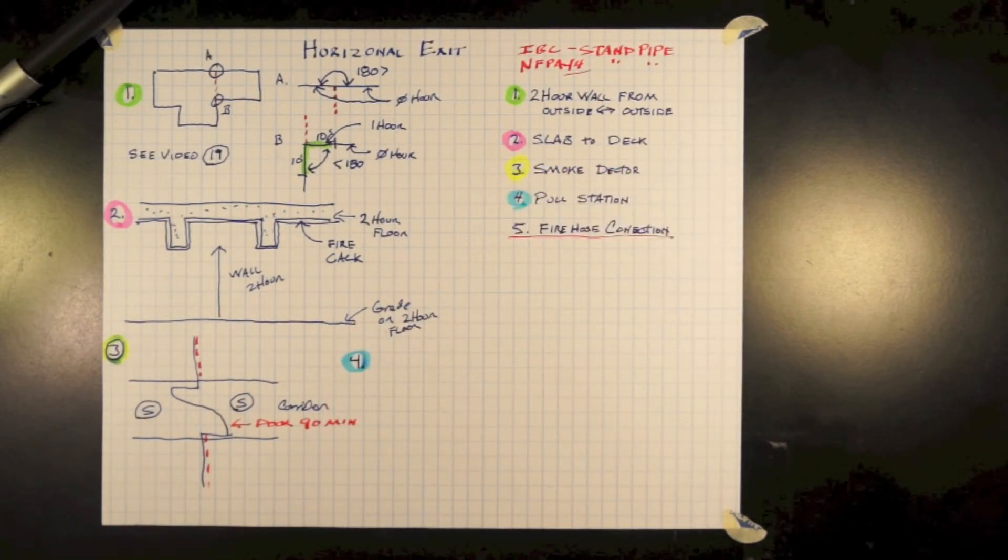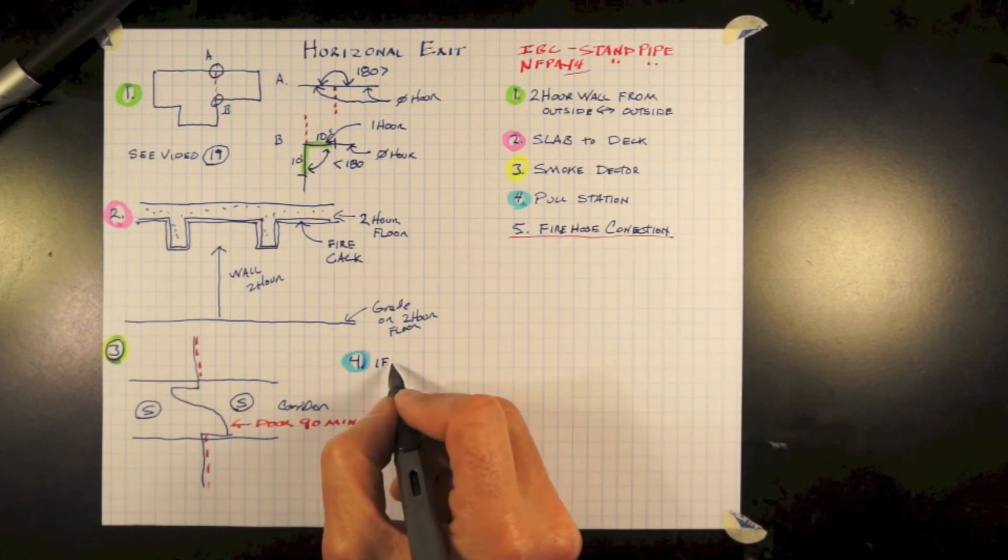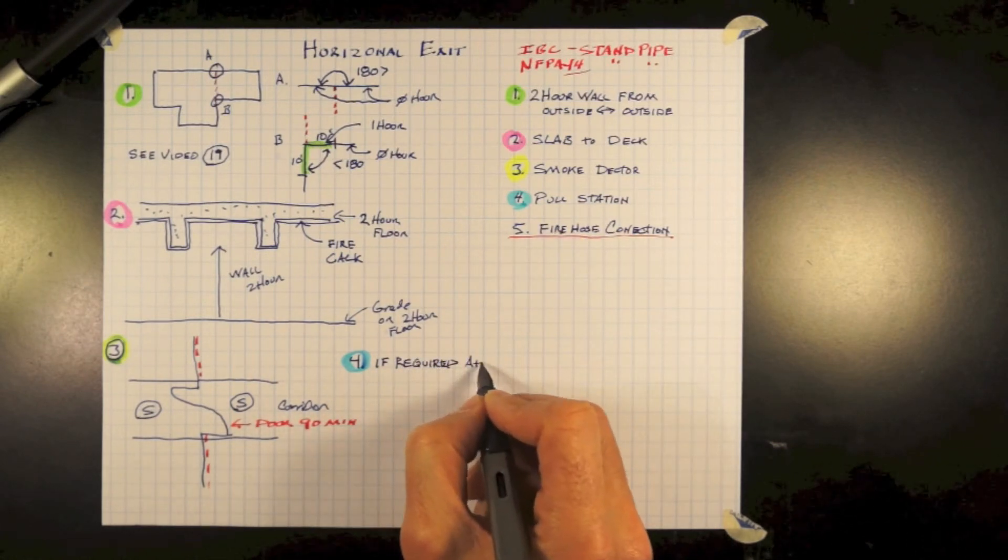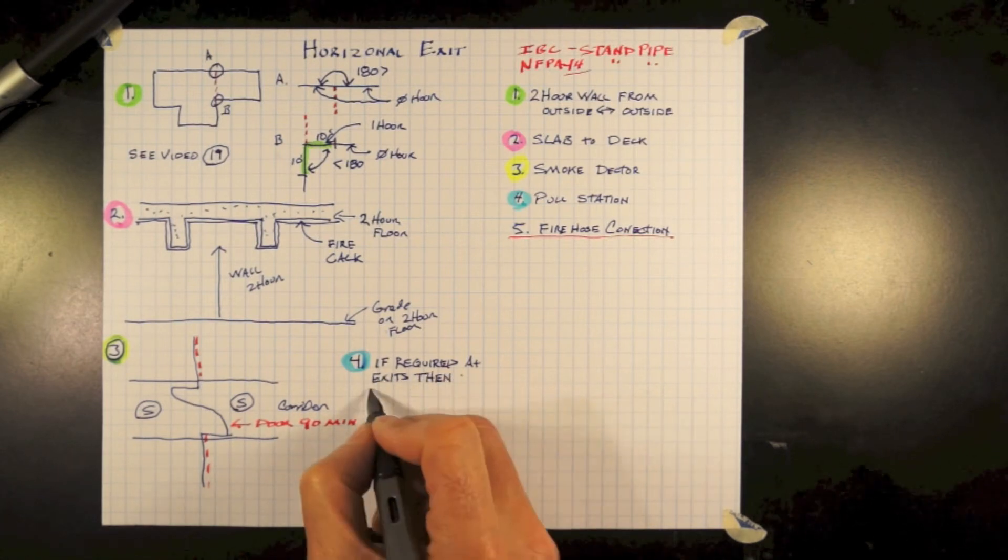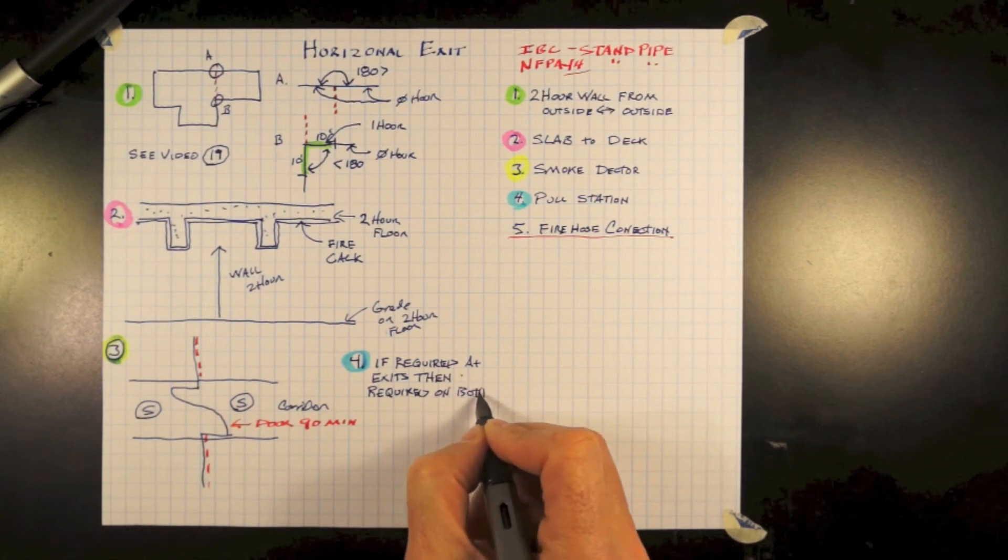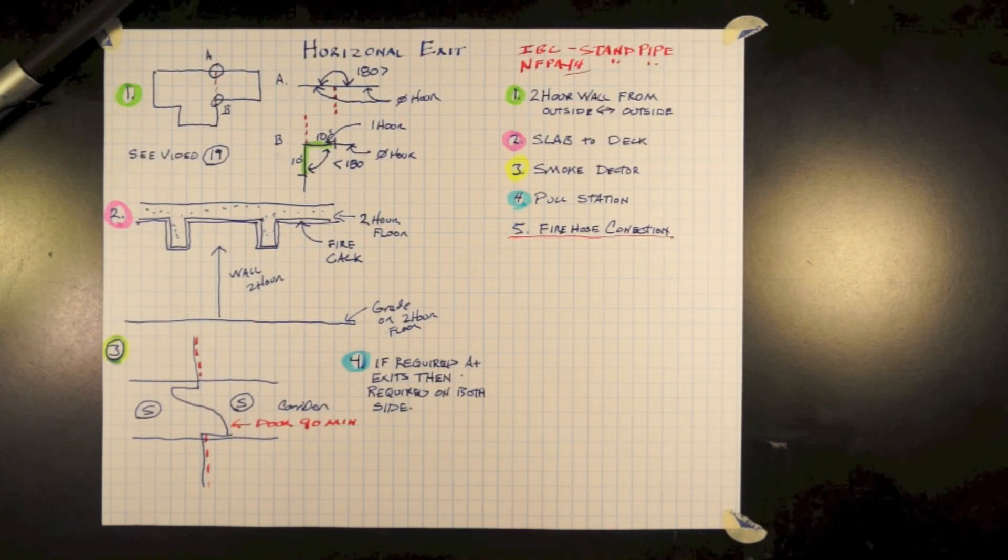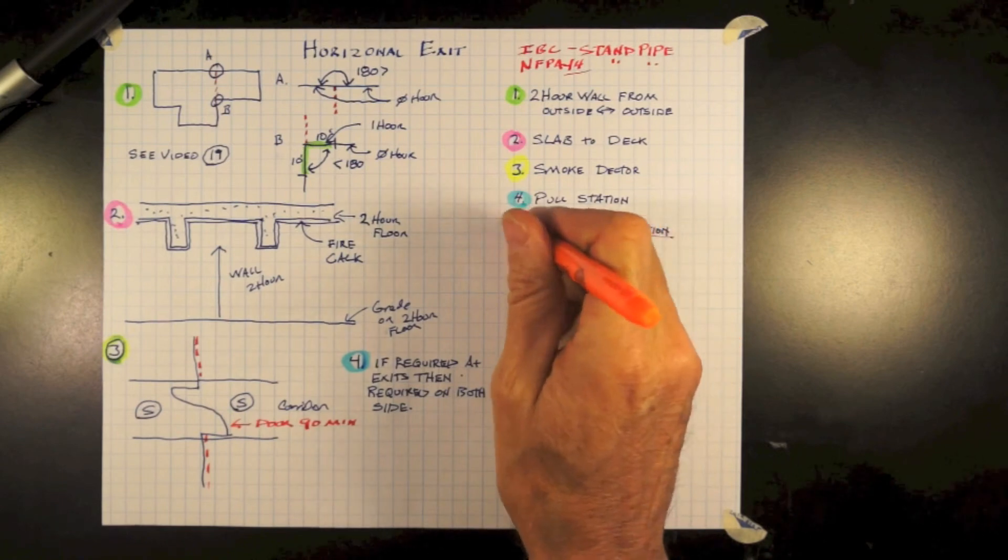Number four, pull stations. Pull stations are being eliminated in a lot of buildings other than one. And some building types require them at nurse stations, such as hospitals, or allow them to be at nurse stations. So where required, if they're required at an exit, a pull station will be required at each horizontal exit, each side.